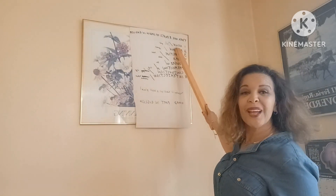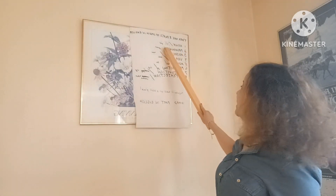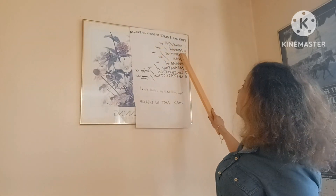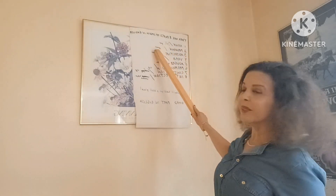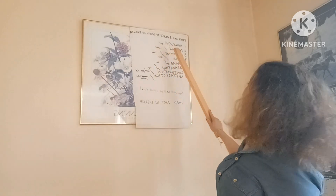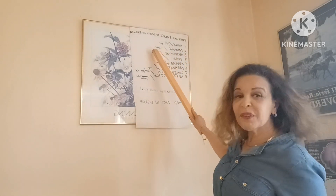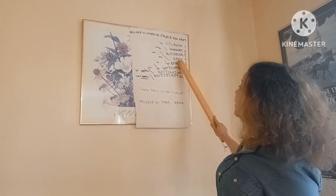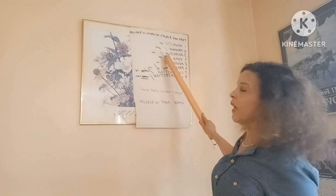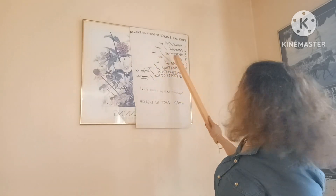It starts with the noun — al-ism. Then the pronoun — al-dhamir. Then the adjective — al-sifah. Then the verb — al-fi'l.